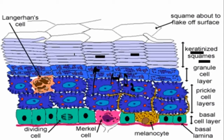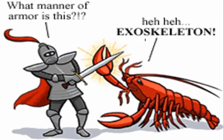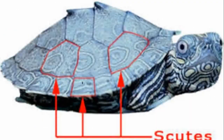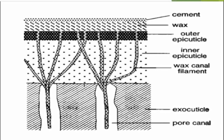Keratin protects the animal's body from abrasive damage. Here we can see exoskeleton examples — for instance, a crustacean arthropod such as a lobster which has an exoskeleton with scute scales and an outer epicuticle. In insects, we can also see wax canal filaments, which secrete wax deposited on the outer epicuticle. This prevents water from evaporating from the body and supports the skin.